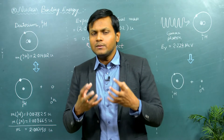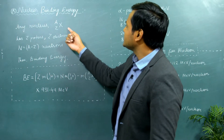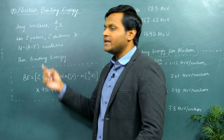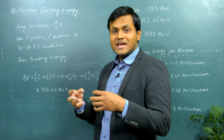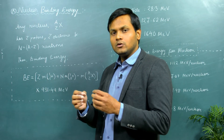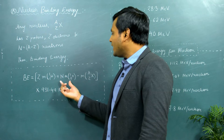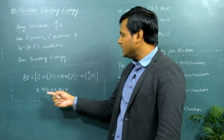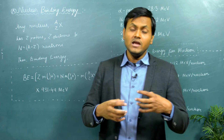This gives us a way of calculating the binding energy of any given nucleus. For a general nucleus with Z number of protons, Z number of electrons, and a mass number A — so A minus Z neutrons — the binding energy can be calculated by multiplying the mass of a hydrogen atom by Z (since hydrogen includes the electrons), adding the mass of a neutron multiplied by A minus Z, subtracting the mass of the nucleus itself, and multiplying by 931.49 mega electron volts. This formula gives us the binding energy of any general nuclear system.